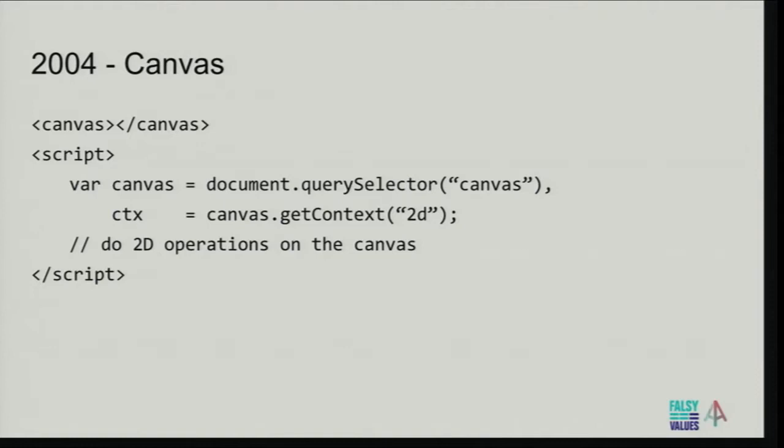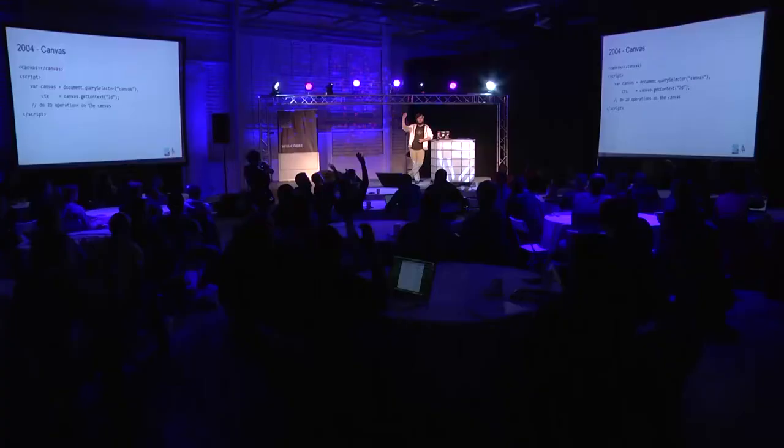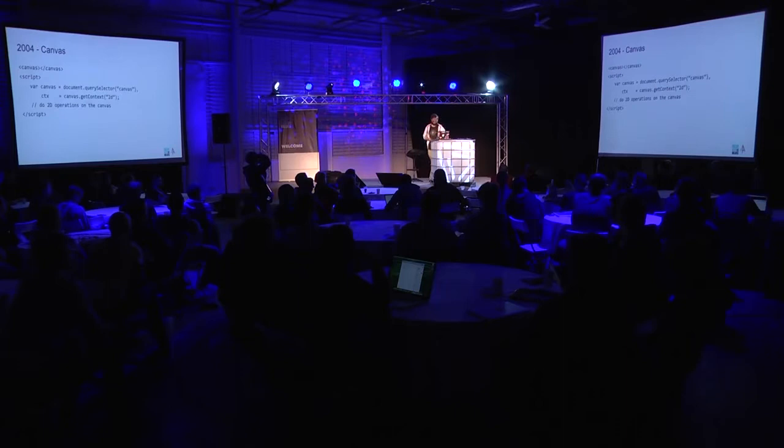In 2004 something else happened — the Canvas specification was introduced. With Canvas, we now had access to bring pixel data on screen, which is nice because beforehand in HTML we only had images, and we could trick around with one-pixel diffs and CSS and JavaScript. But we didn't really have access to the graphics card. With Canvas, we now have a way to actually put pixels onto the screen really fast, so we could do things like games and stuff.